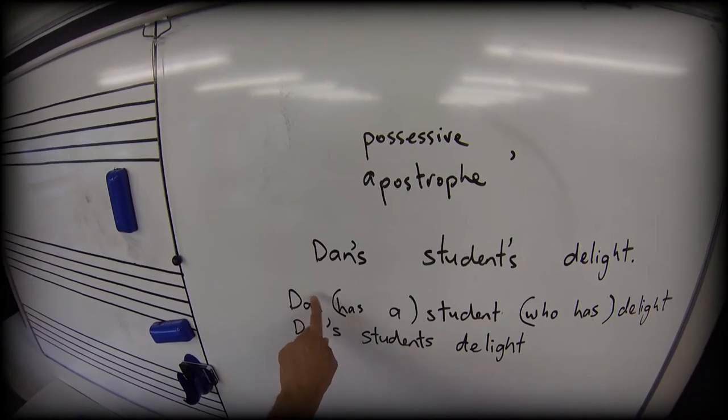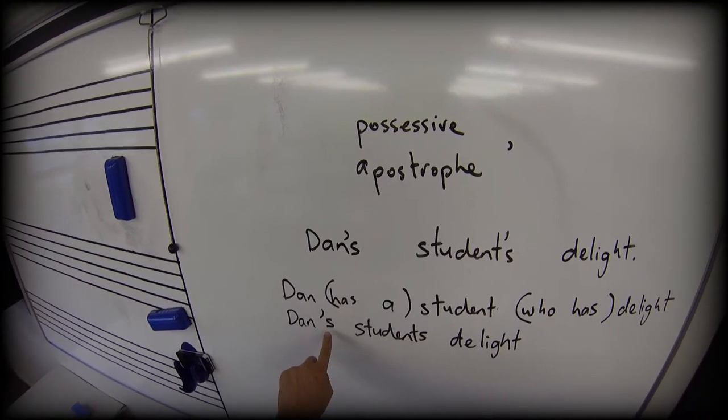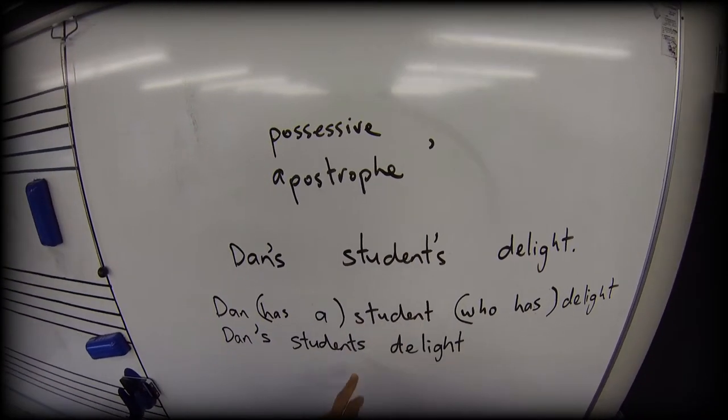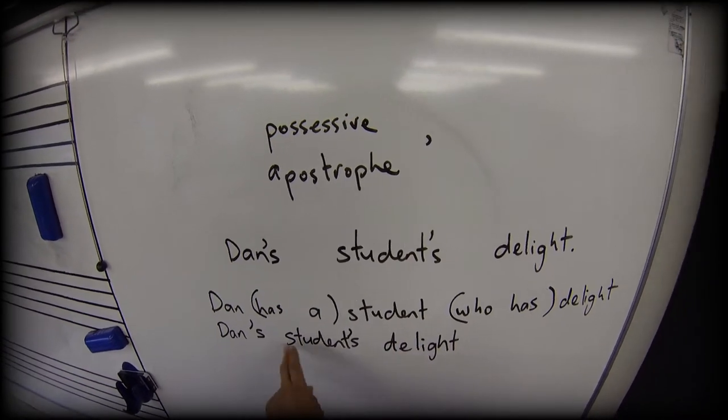Because Dan has a student who has a sense of delight. Which means I would go Dan has a, apostrophe S, student, apostrophe S, then delight.